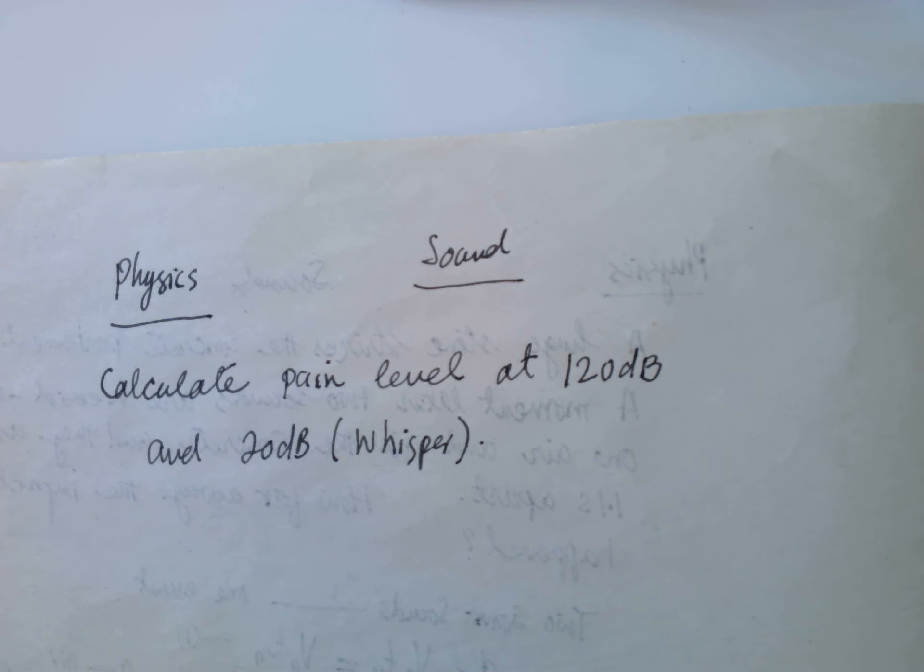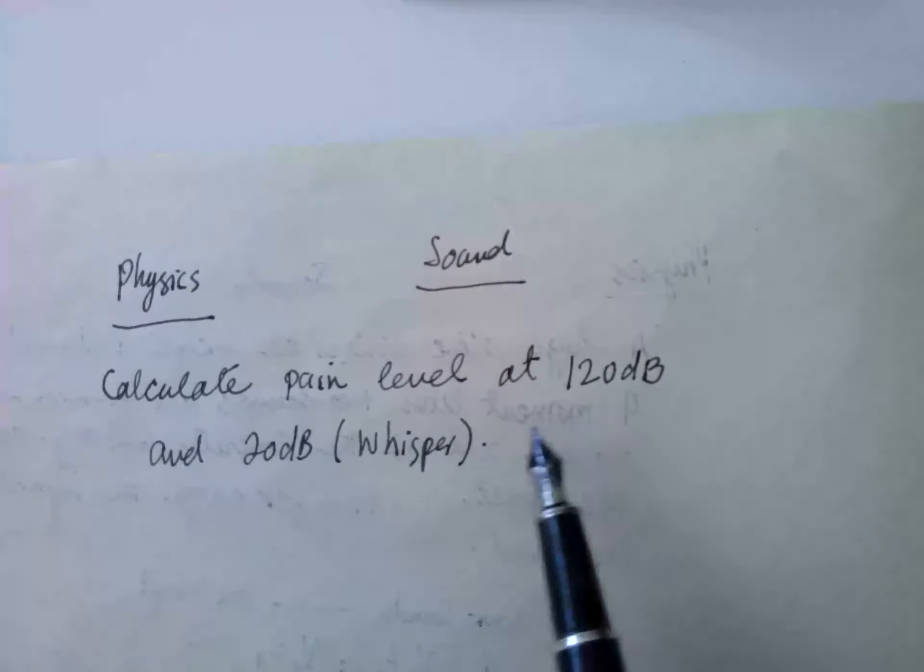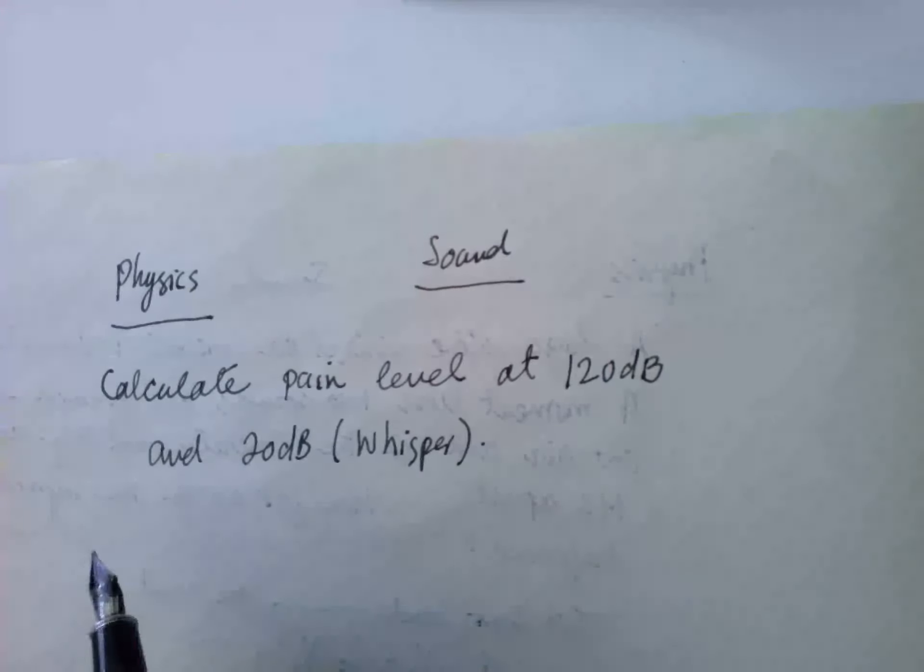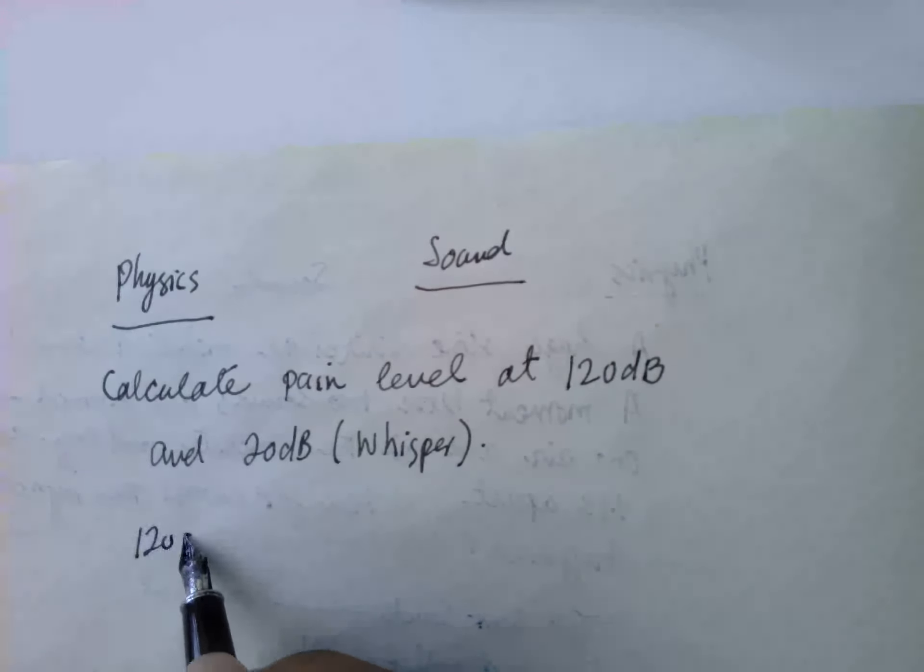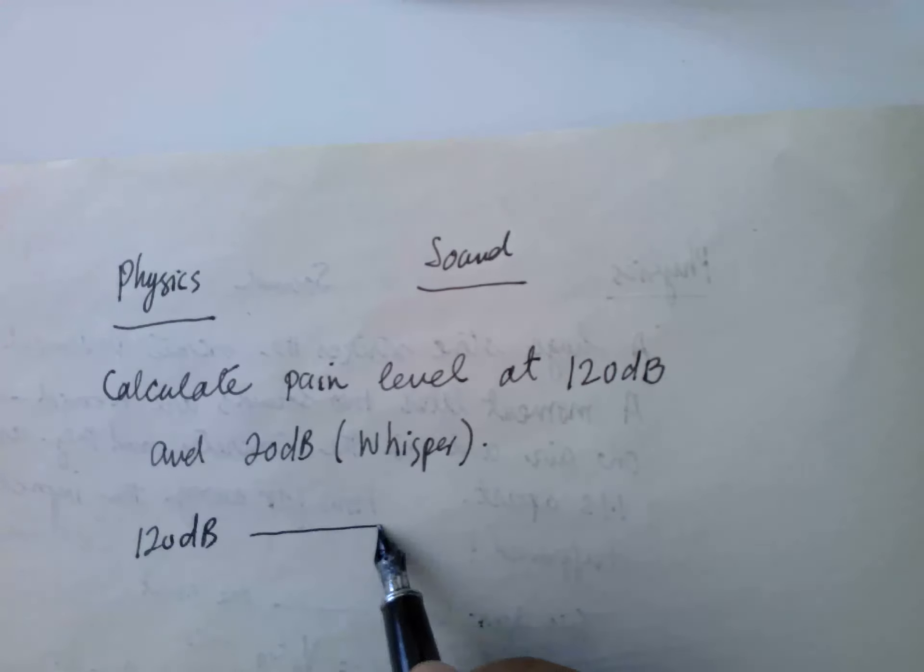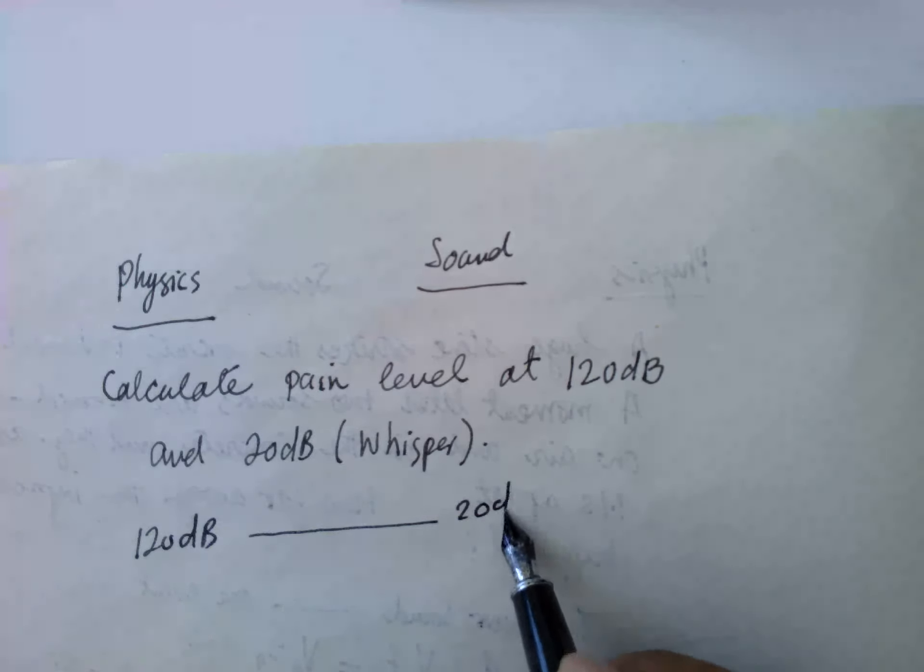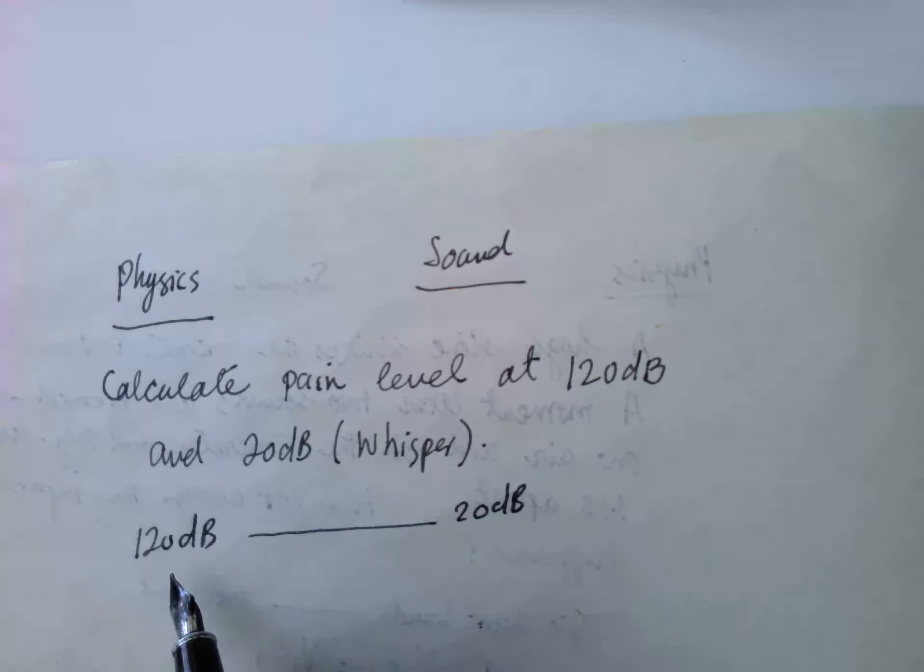Hello physics, sound. The problem is to calculate the pain level of two different sounds: one is 120 dB and another one is at 20 dB. So 120 dB sound and a whisper, which is a 20 dB sound.